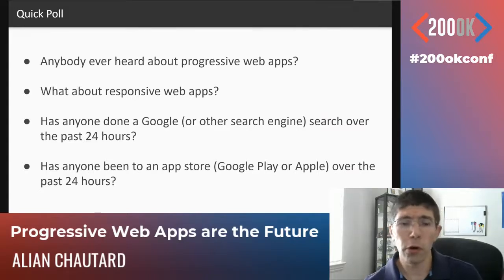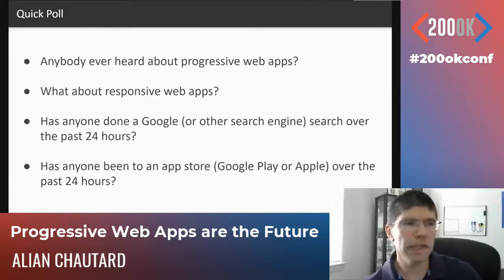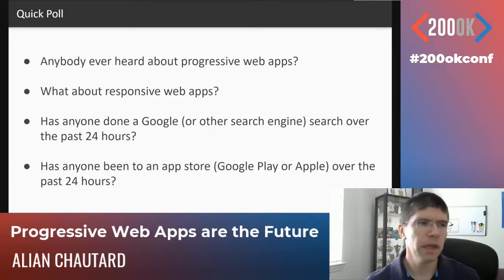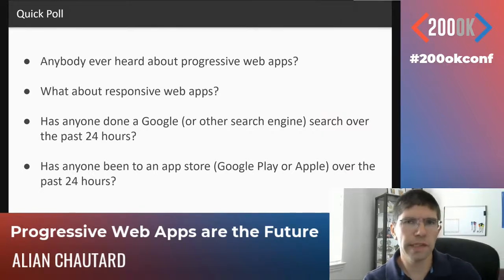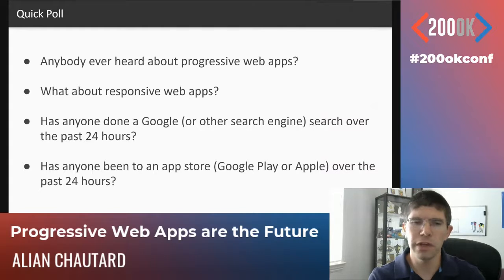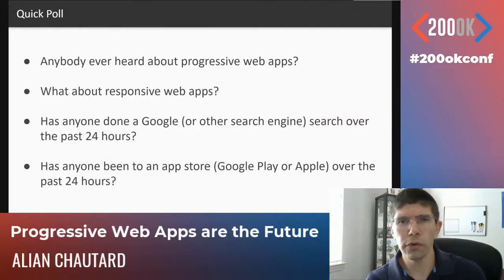One term that people are usually more familiar with is responsive web apps, because responsive web apps have been around longer, and the terms are close enough that people can confuse them. Responsive web apps are really all about having a web app that works nicely on a mobile device — from a CSS perspective, the code is responsive and fits nicely on your screen. Progressive web apps go beyond that. A progressive web app is responsive, but it is also a lot more than just that.